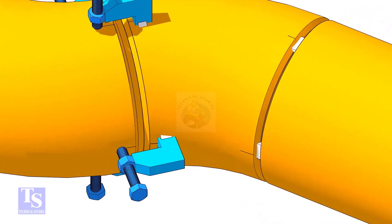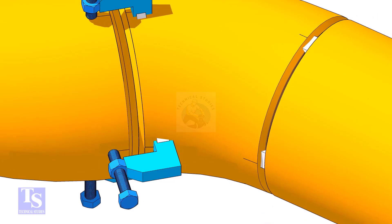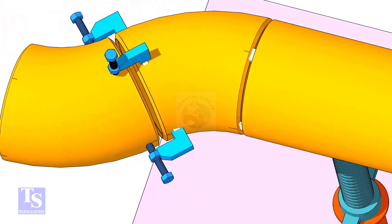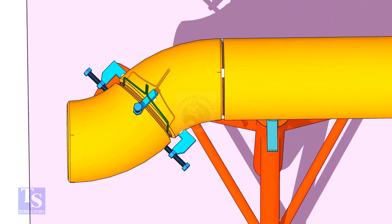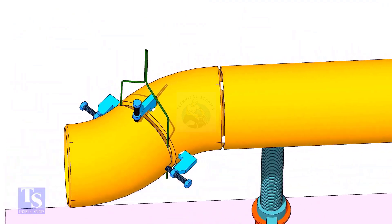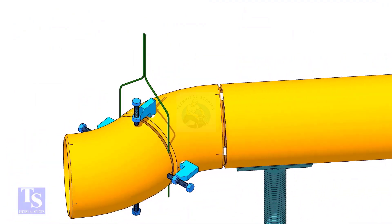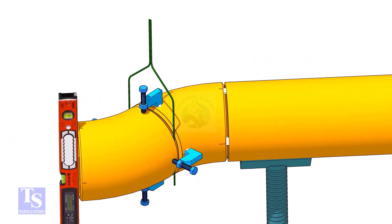Put the gap rod between the elbows and maintain the required gap. Check if the face is level.